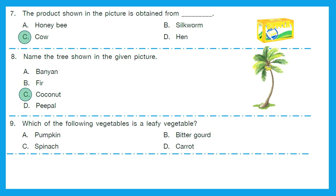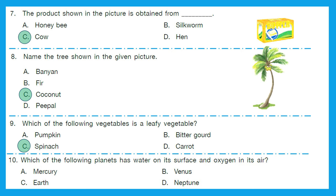Question 9: Which of the following vegetables is a leafy vegetable? Is it pumpkin, bitter gourd, spinach or carrot? The right option is Option C — spinach. Spinach is a leafy vegetable.